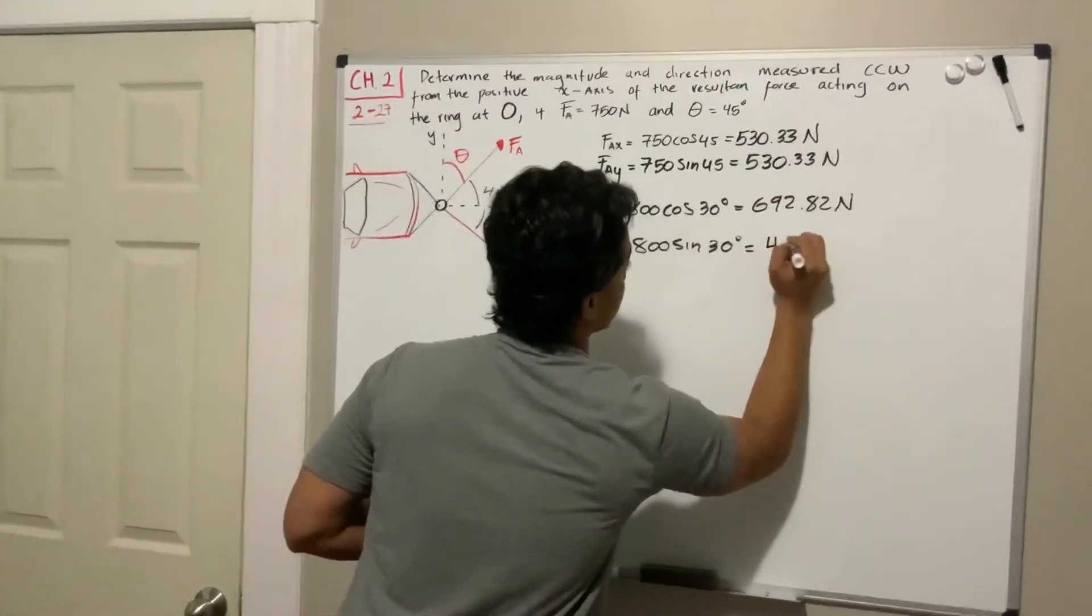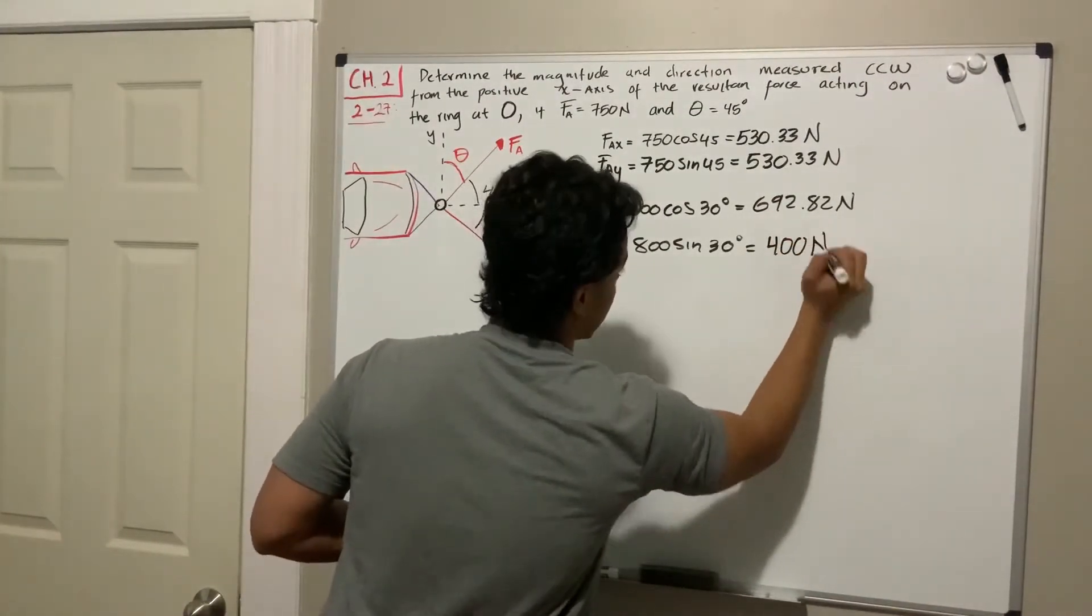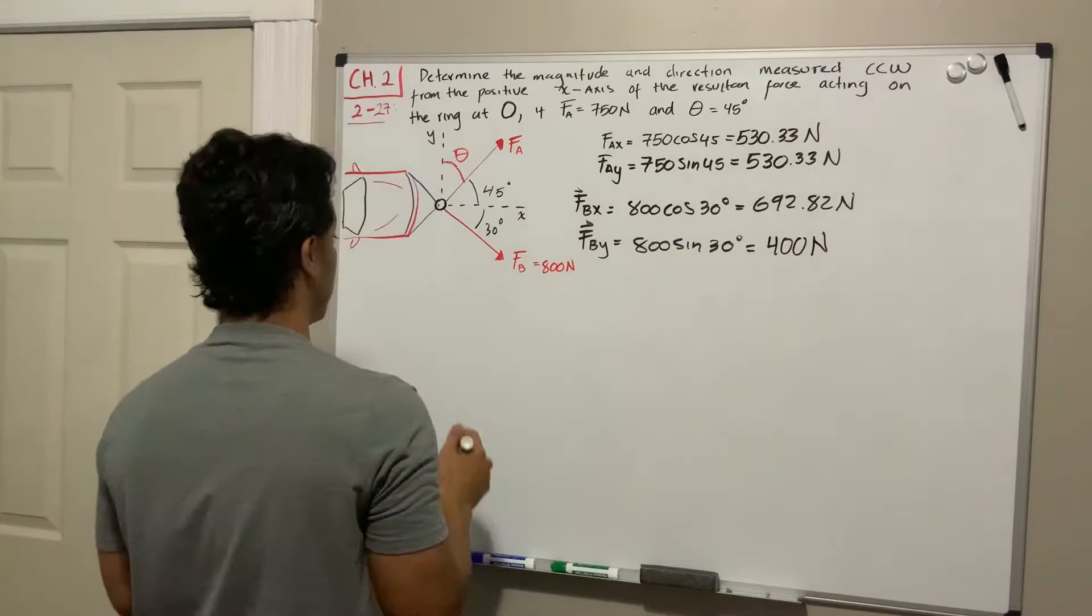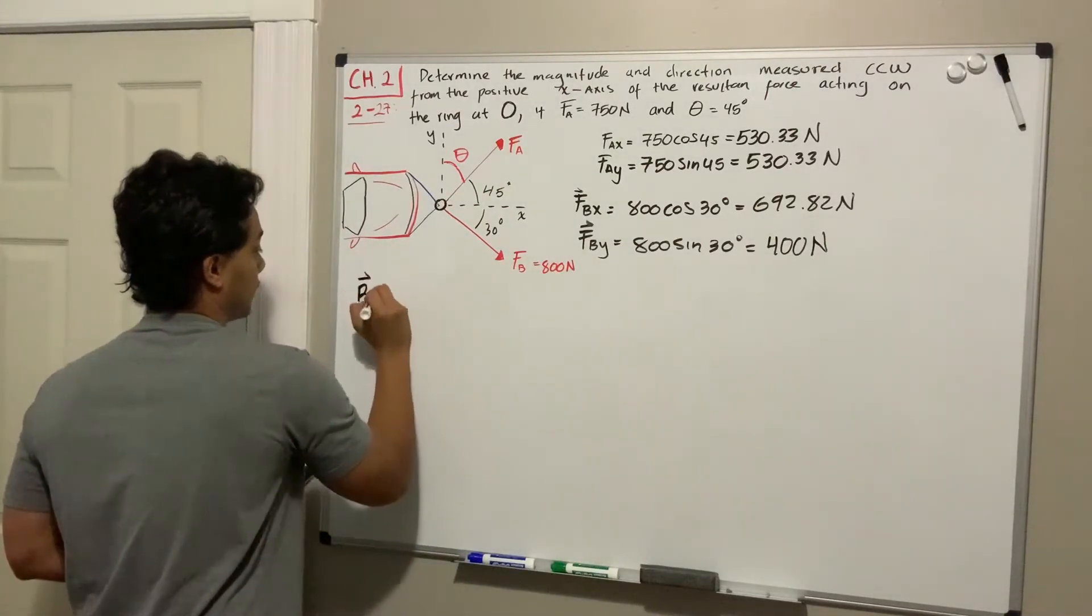F_B in the y-direction is equal to 400 N. Now in order to find the resultant, we're going to add them up.